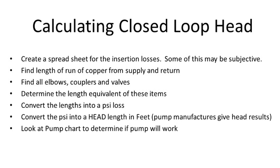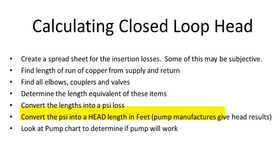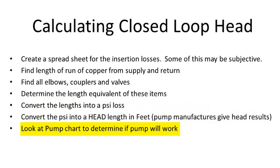We need to make a very good value judgment for the length of copper on the run to the supply and to the return. We need to count all the valves, couplers, elbows, pumps, and anything else in the system that will create loss, then convert that into an equivalent distance. Once we know that length, we convert it to a PSI loss. Pump manufacturers give results in feet of head, so we'll convert our PSI into a head distance, then look at a chart to determine if that pump meets the criteria.